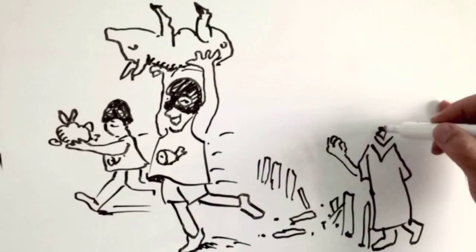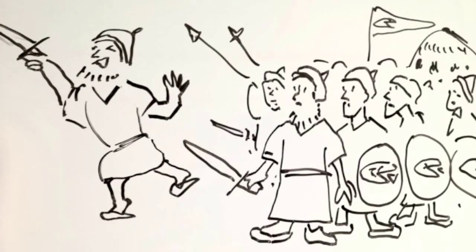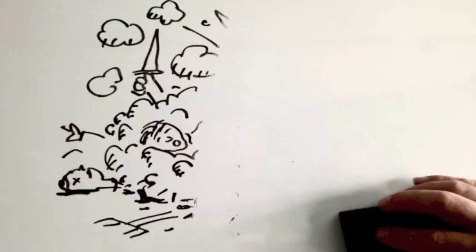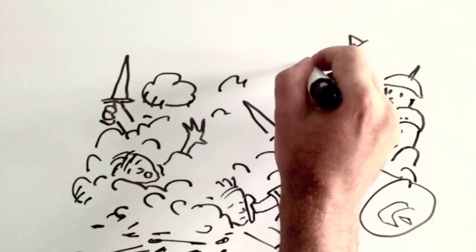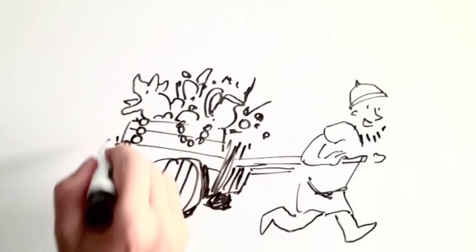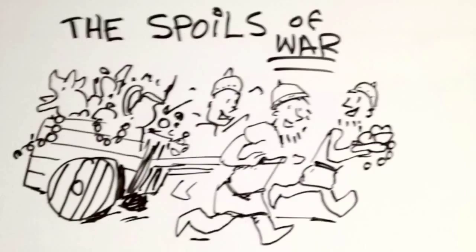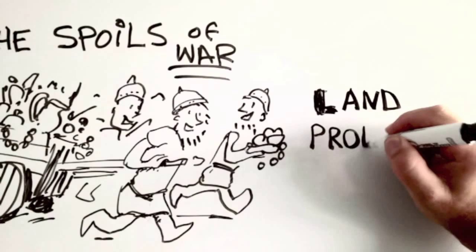Now one of the tribes develops an army to protect themselves. Until they actually use that army to raid one of the smaller and less protected tribes. And in doing so, they wipe out the whole tribe. And they learn something brand new: the spoils of war, which allows them to confiscate all the possessions of that tribe. The land, their produce, their livestock.